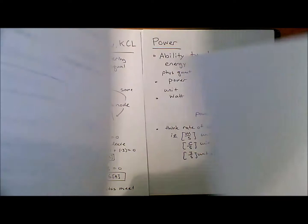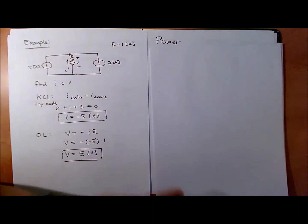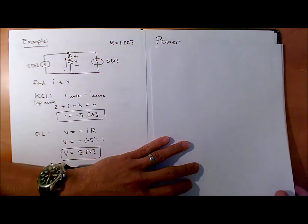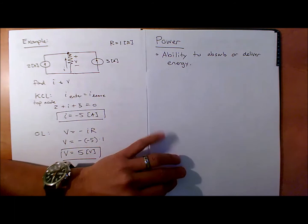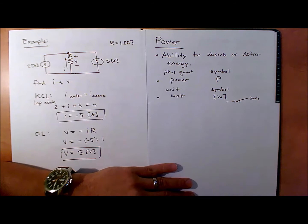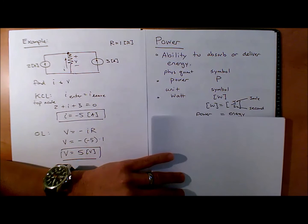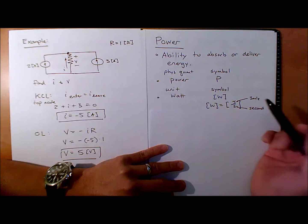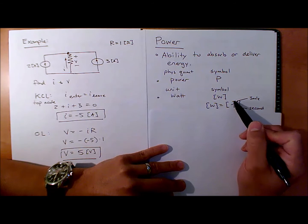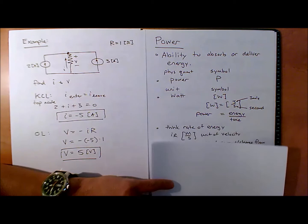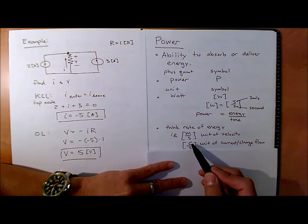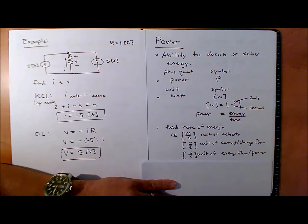The next topic is power. Power is so fundamental to engineering — you really have to get a good grasp on it. Power is the ability to absorb or deliver energy. The symbol is P, the unit is the watt, symbol W. Power is the time rate of change of energy — joule per second equals a watt. Current is coulombs per second; power is joules per second, or energy per time.